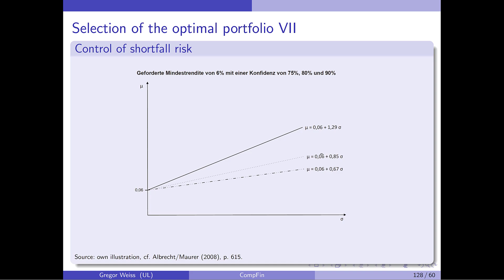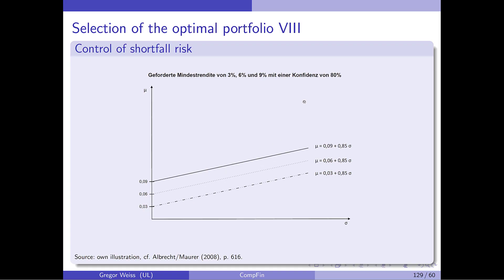If we have a confidence of 80 percent and we are requiring a minimum return of 3, 6 and 9 percent, then obviously this constraint only moves up. And we have constrained our set of feasible portfolios. And we now have to optimize in this upper part of the plot.